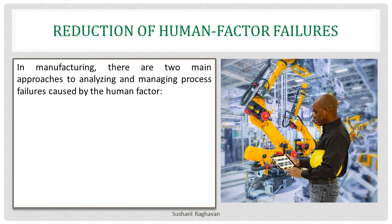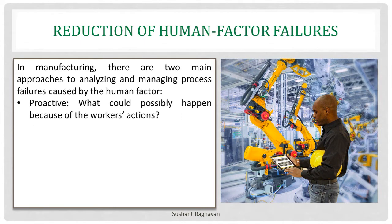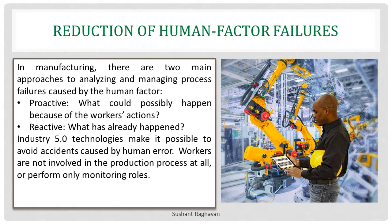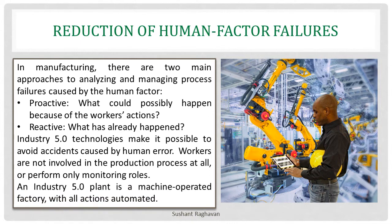In manufacturing, there are two main approaches to analyzing and managing process failures caused by the human factor: proactive, which addresses what could possibly happen because of workers' actions, and reactive, which addresses what has already happened. Industry 5.0 technologies make it possible to avoid accidents caused by human error. Workers are not involved in the production process at all, or perform only monitoring roles. An Industry 5.0 plant is a machine-operated factory with all actions automated.